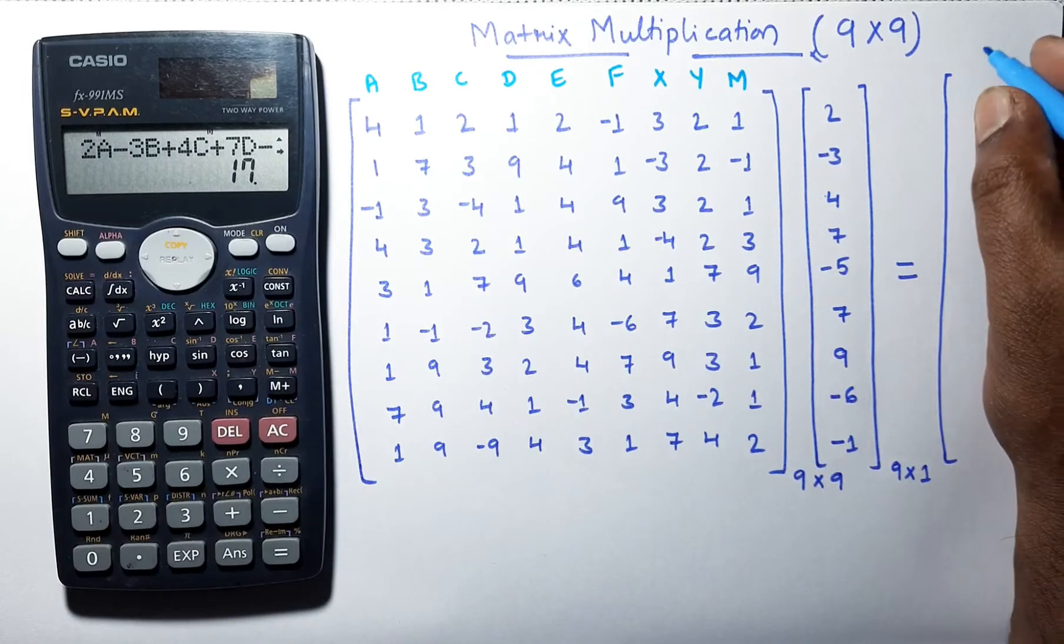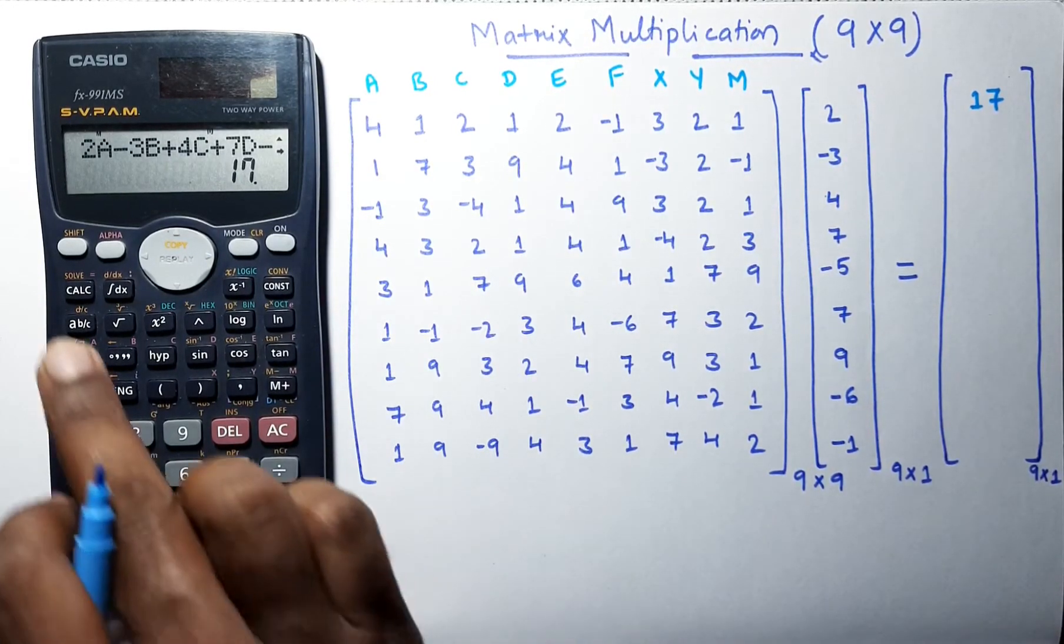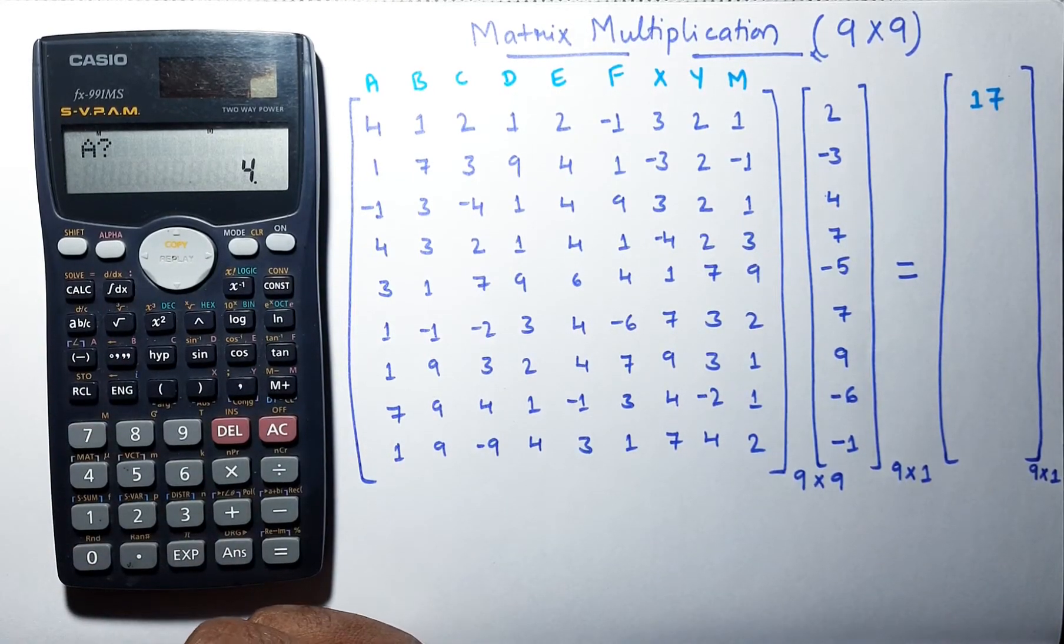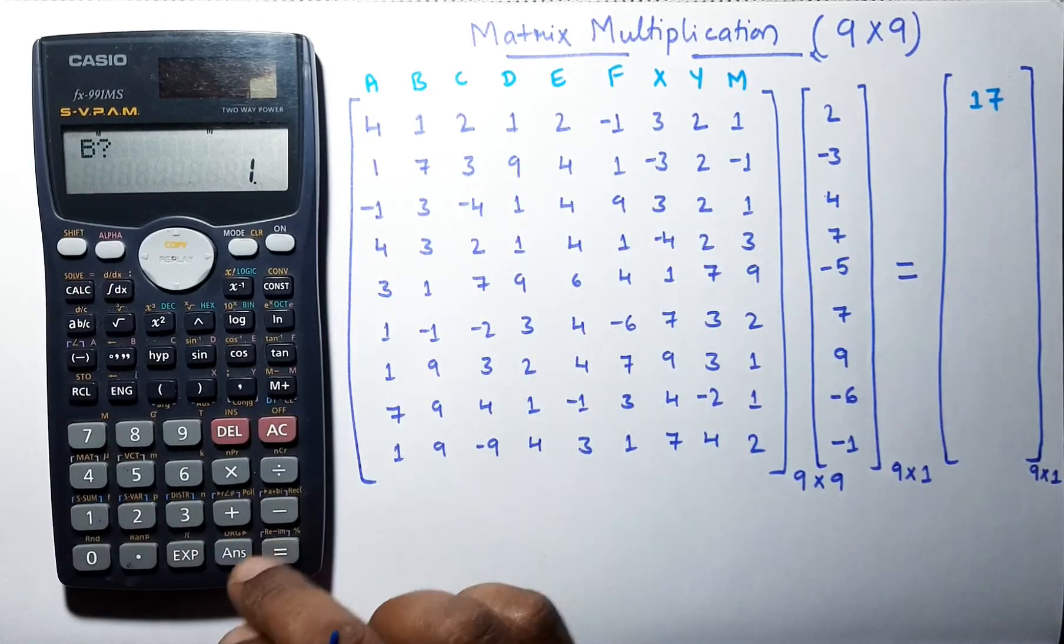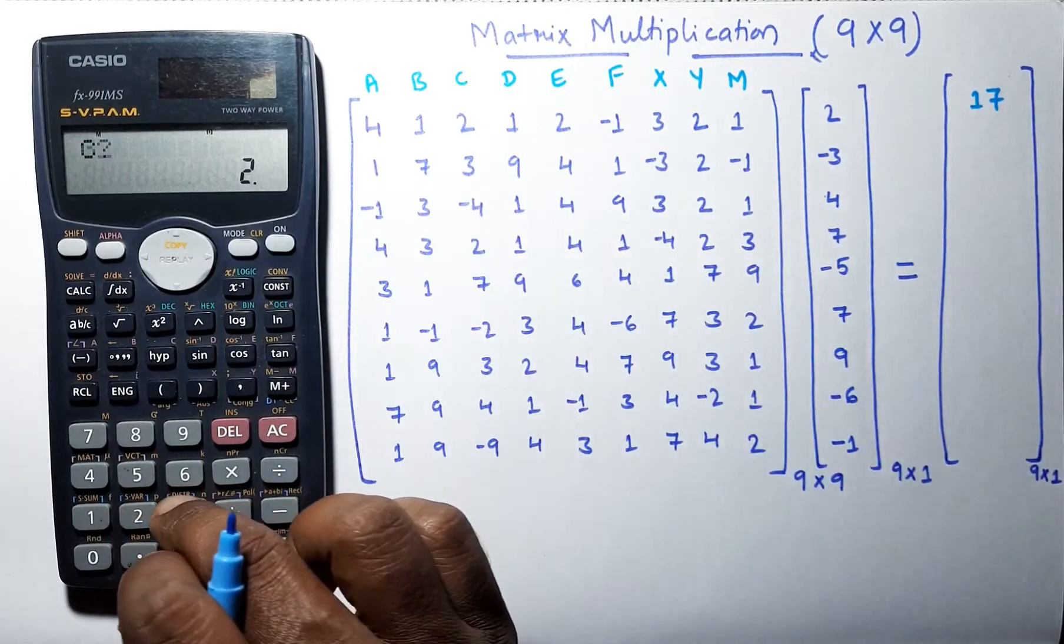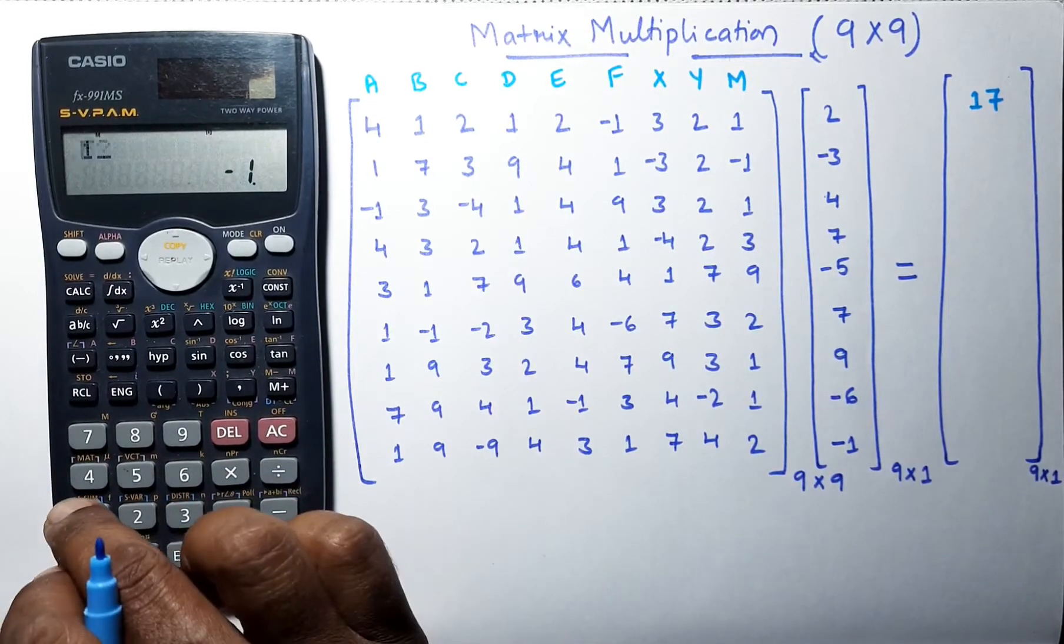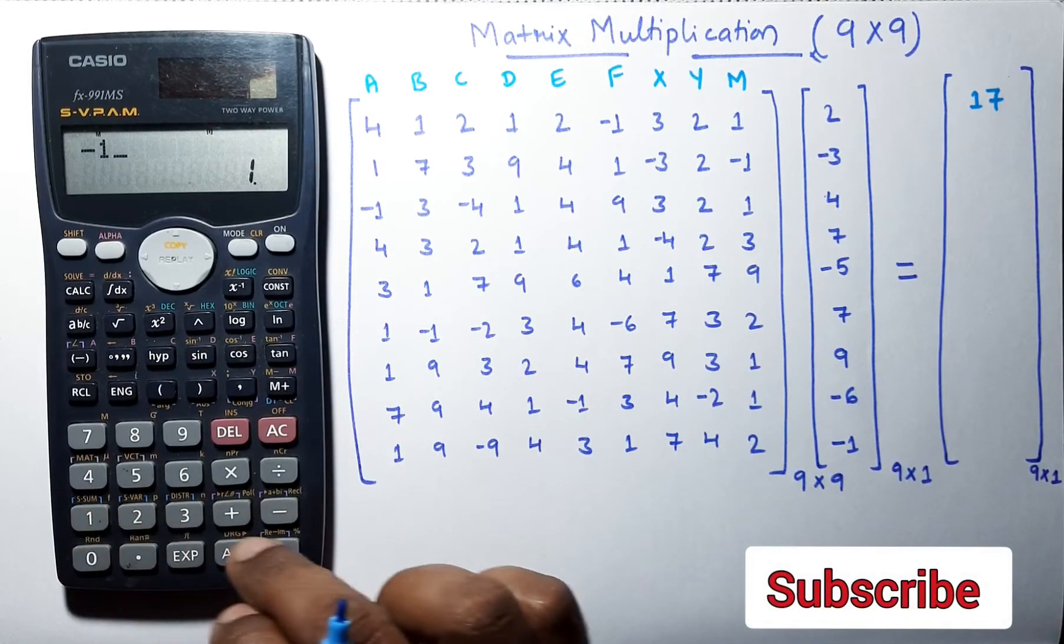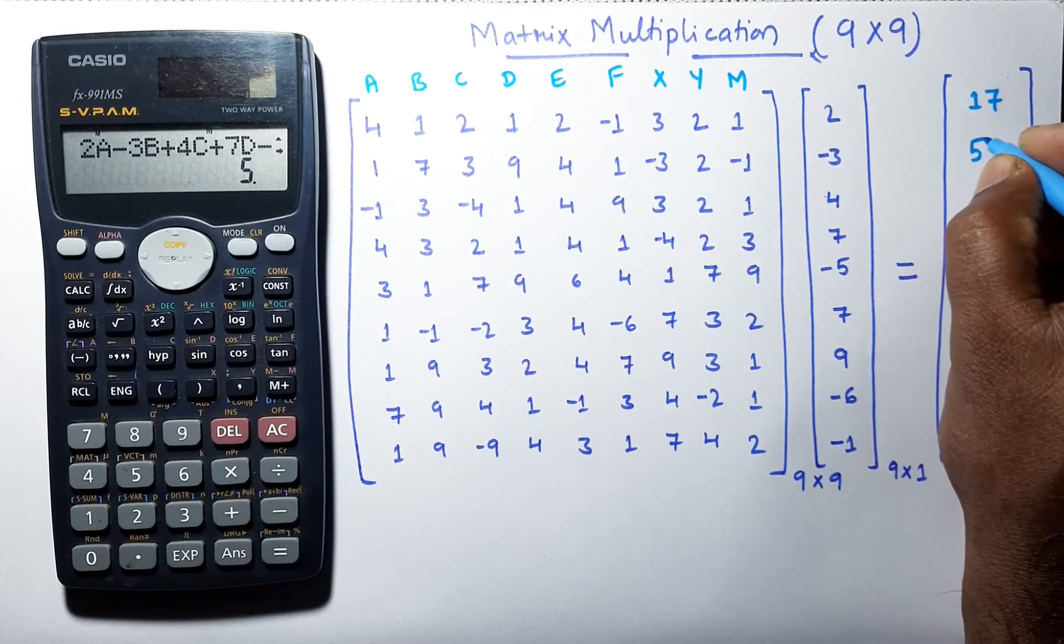Let us note down this. Now, when you again press calculate button, it will ask for the next set of values. Now, we have to enter all these values: 1, 7, total row we have to enter 3, 9, 4, 1, minus 3, 2, minus 1. Now, we are getting the next answer as 5.